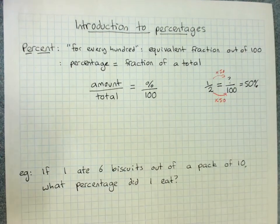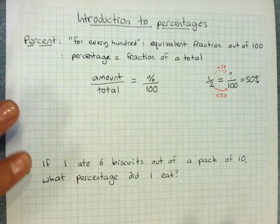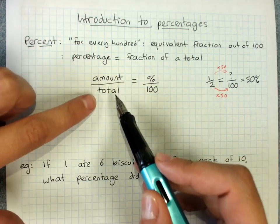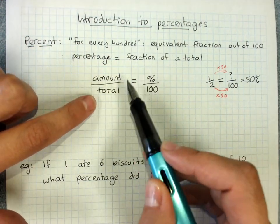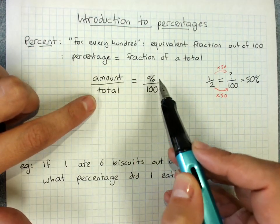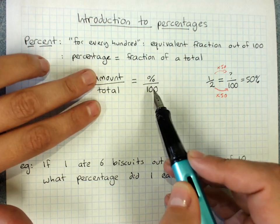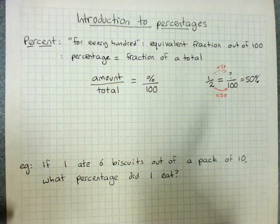And we knew that. So any percentage is just an amount out of a total, but we've written it as an equivalent fraction out of a hundred.